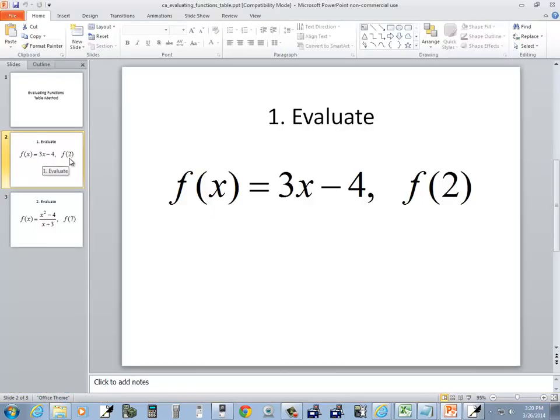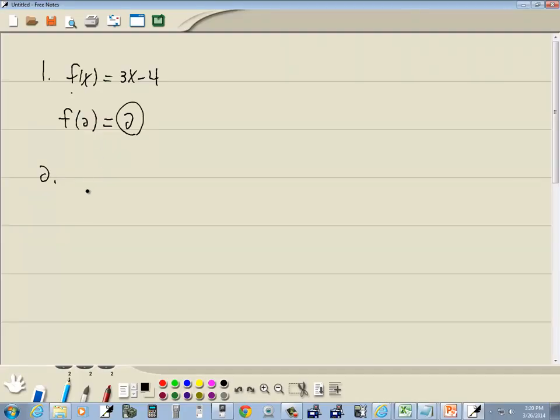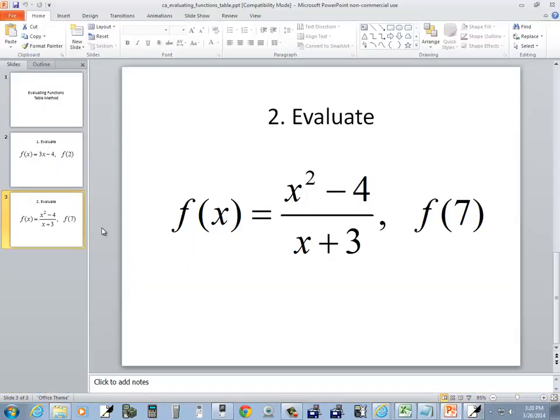Let's look at a second one of those. We've got f of x is equal to x squared minus 4 over x plus 3, and we want to find f of 7.